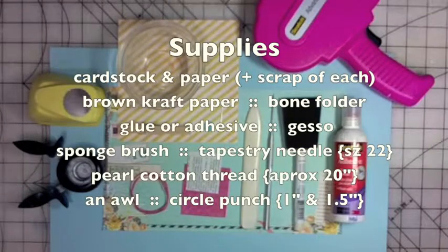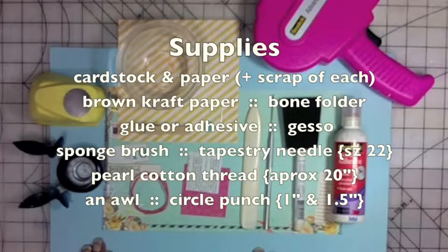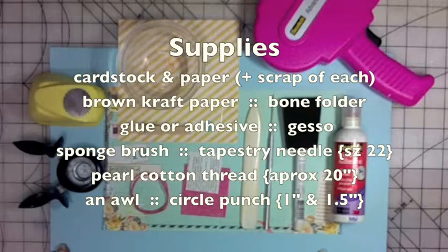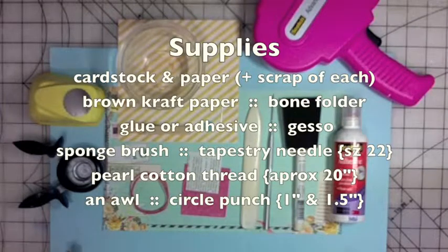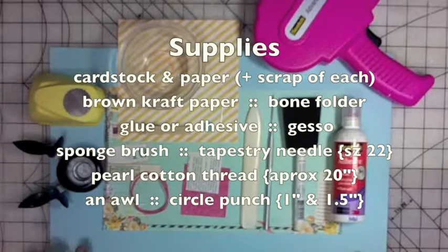Cardstock for the cover and paper for the inside pages, plus scrap of each, brown craft paper for the pocket, bone folder, glue and or adhesive, gesso, sponge brush, a tapestry needle number 22, pearl cotton thread, and some circle punches.